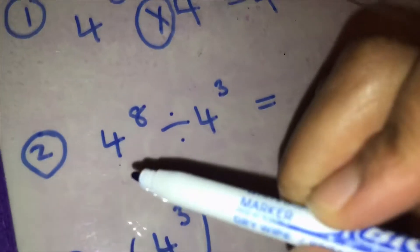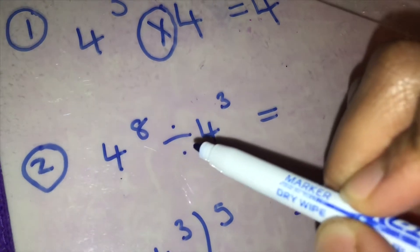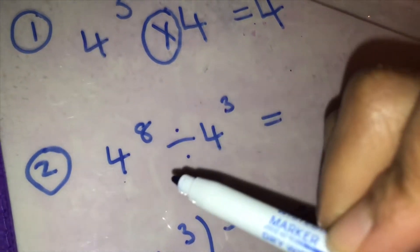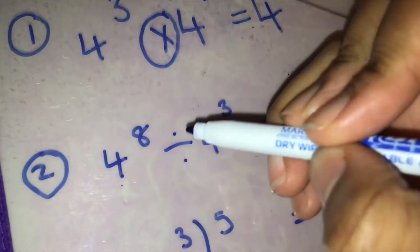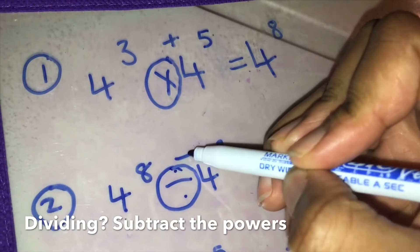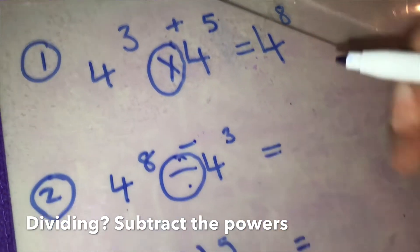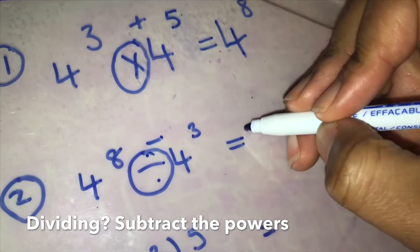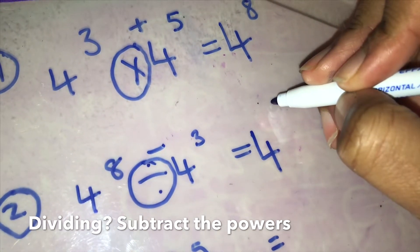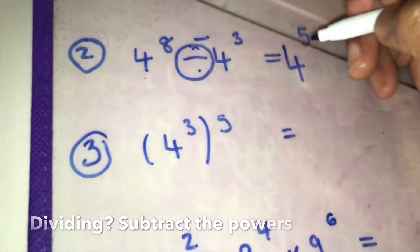Now, four to the power of eight divided by four to the power of three — when you're dividing, you take away the powers. So you've got four, eight take away three is five — four to the power of five.